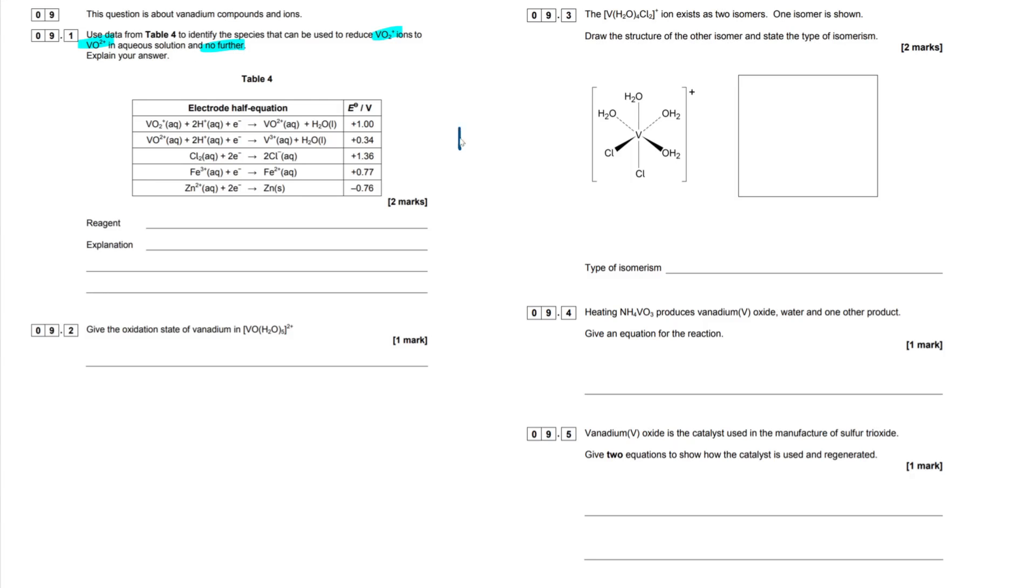So let's jump into this. This question is about vanadium compounds. Use data from table 4, so there's electrode potential data right here, to identify the species that can be used to reduce this vanadium ion down to this vanadium ion in aqueous solution and no further. This point is really important, the no further part. Now, for this question, we have to remember the NOPR rule. This essentially tells us what we'll be able to reduce something, what we'll be able to oxidize something, based on our electrode potential data here. More negative half cell will always be oxidized, the more positive half cell will be reduced.